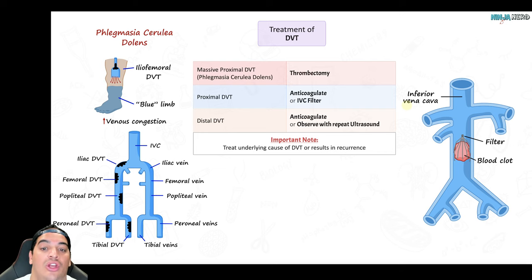Choosing between CTPA and V/Q scan depends on the patient. If they have contrast allergy or significant kidney disease, prefer a V/Q scan. In most cases, CTPA is preferred — it directly visualizes the clot in the pulmonary artery. The V/Q scan shows perfusion defects as wedge-shaped areas of absent perfusion compared to normal ventilation. If either test shows no PE, it's excluded. If PE is confirmed, proceed to risk stratification.